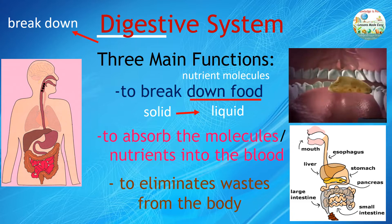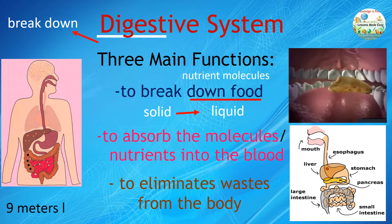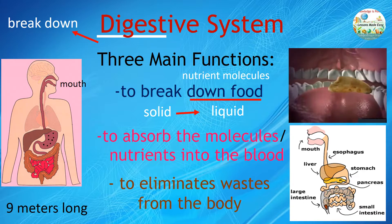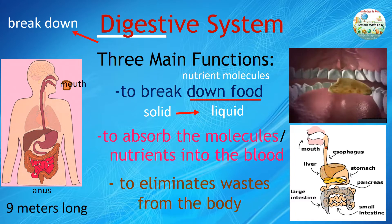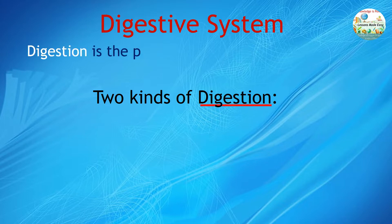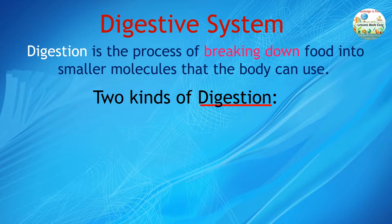An adult digestive tract is about 9 meters long. It runs from the mouth, where digestion begins, to the anus, where waste is eliminated. There are two kinds of digestion. But what is digestion? Digestion is the process of breaking down food into smaller molecules that the body can use.